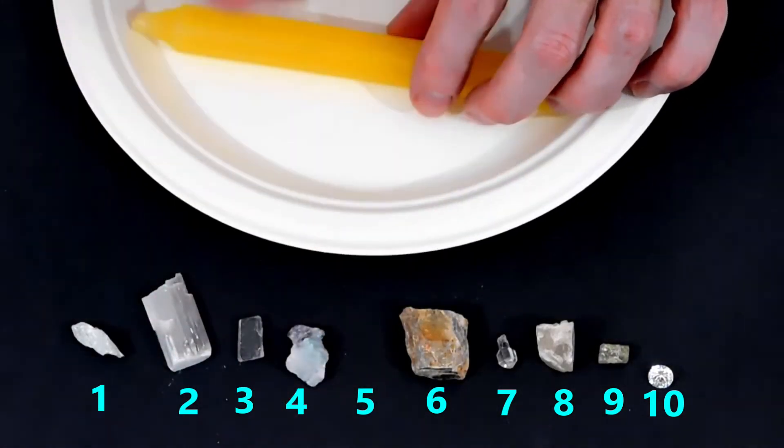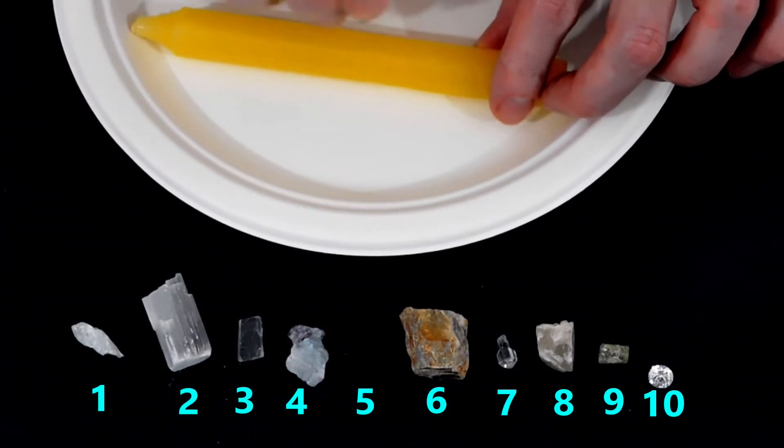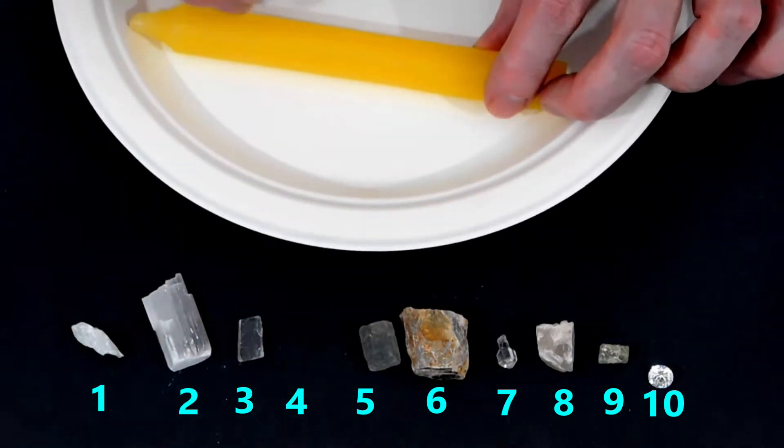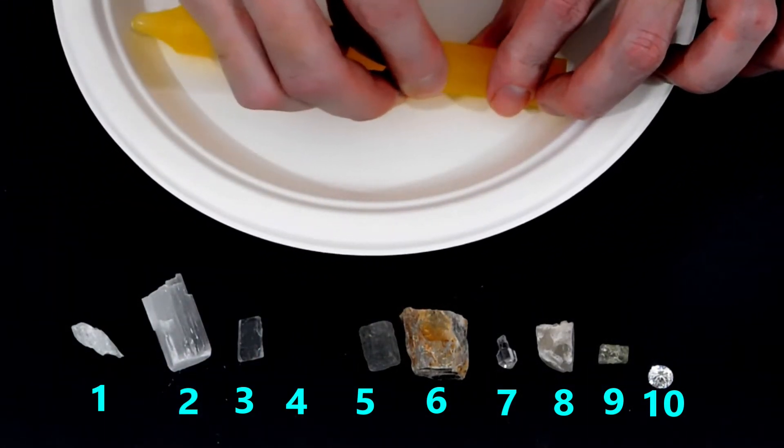For our last example, we'll test this wax candle. As before, we start with apatite and it easily scratches the candle. Then we try fluorite and it also scratches the candle.